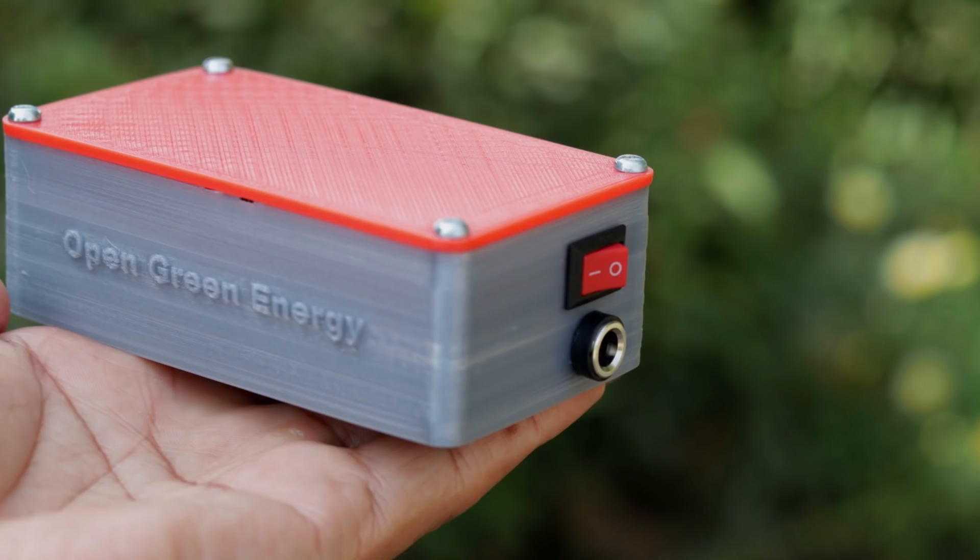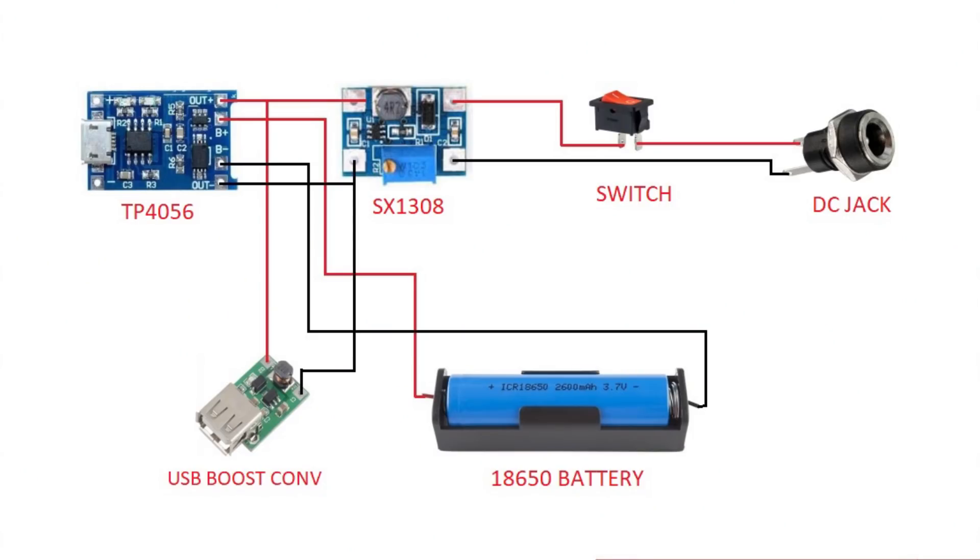Before moving to make the project, let's see the working principle of the circuit. The 18650 battery is charged by a TP4056 module. The protection IC in TP4056 module prevents the battery from overcharging or over discharging.